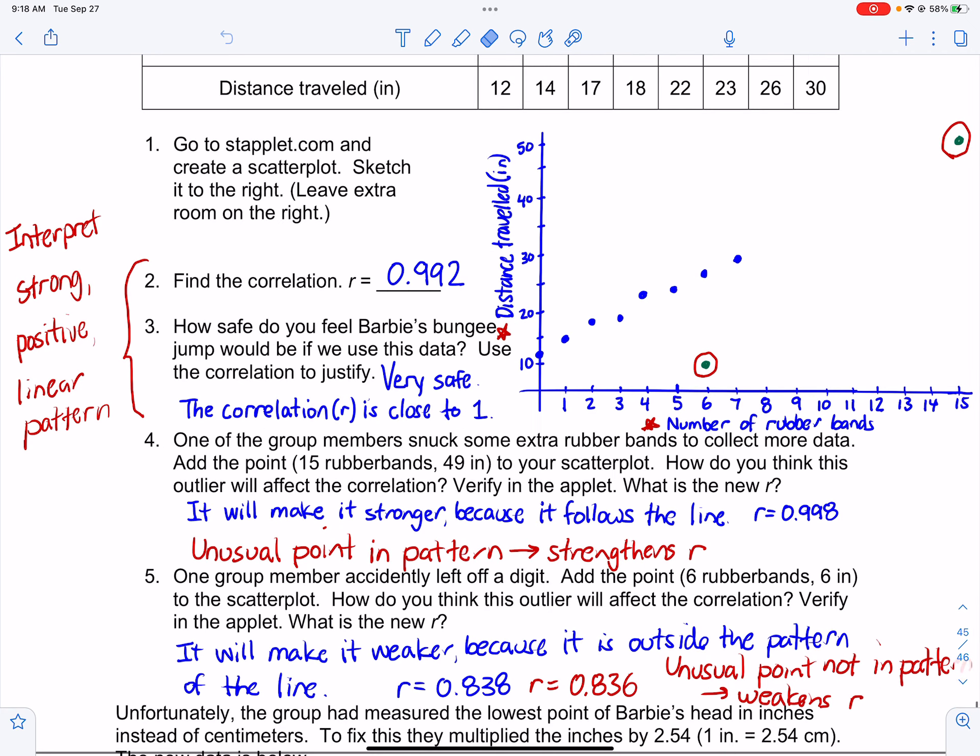And then you're going to add, and on number four, you're going to add this point that's at the top right-hand side of the screen. And at the top right-hand side of the screen, you add it. And then at that point, you're going to look at the correlation again, and you're going to say, oh, wow, it's actually 0.998. So it actually gets stronger. So what you're supposed to learn from this is that an unusual point or an outlier in the pattern of the data, in the pattern of the line, actually increases the correlation.